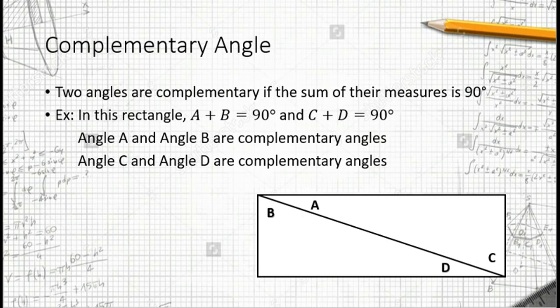We all know the fact that a rectangle has four 90 degree angles. Therefore, angle A plus angle B equals 90 degrees, so that they are complementary angles. Same with angle C and D.